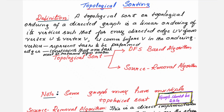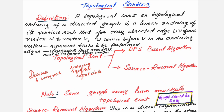Hello viewers, welcome to this video lecture series on analysis and design of algorithms. This session I shall discuss topological sorting. Topological sorting uses the decrease and conquer approach. This is a technique used to reduce the size of the input data at each step of the solution process.